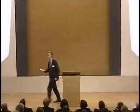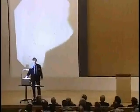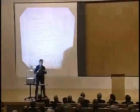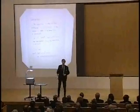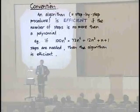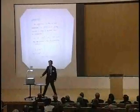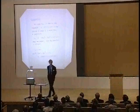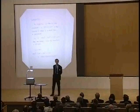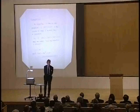What do computer scientists say about this? They want to distinguish between step-by-step procedures that are practical and those that are not practical. The convention is the following: if n is the size of the problem — which in this case might be the number of nodes — then a procedure is practical if it is no worse than a polynomial in n. A polynomial is some expression like 100n to the 8 plus 73n to the 6. Then the algorithm counts as efficient; and if you can't say there's some polynomial that gives you an upper estimate on how long it takes, then you say it's inefficient.